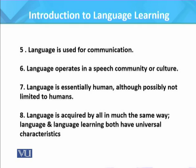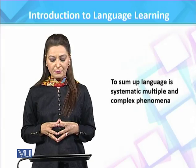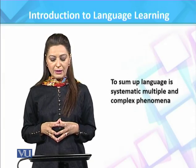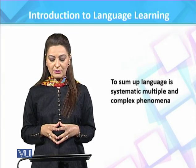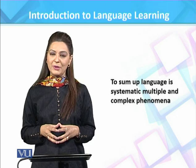Language is acquired by all in much the same way. Language and language learning both have universal characteristics, meaning language features are similar in all languages and the process of acquisition is also common, as it involves cognition and behavior. So to sum up, language is a systematic, multiple, and complex phenomenon.